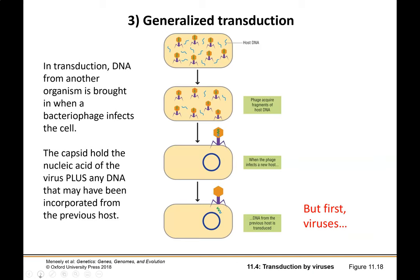So, general outline of transduction: a virus has infected a cell. In this case we've got our bacteriophage infecting a bacterial cell, and as part of this process, pieces of host DNA can be incorporated into the DNA that is transferred when a virus replicates. When this virus replicates, it might pick up a piece — you can see this little red bit here — a piece of DNA from that host cell, and then take it with it to the next cell, transferring both the viral DNA and the new DNA from the previous host cell.